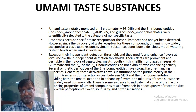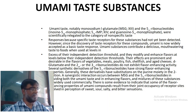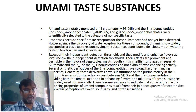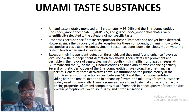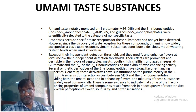Umami substances contribute a delicious, mouth-watering taste to food — for example in chicken cubes, different kinds of soups, and liquid noodles. They exceed their independent detection threshold and modify and enhance flavor levels. Their effects are prominent and desirable in the flavors of vegetables, meat, poultry, fish, shellfish, and aged cheeses — especially through glutamate and the 5'-ribonucleotides.